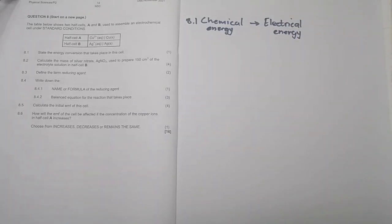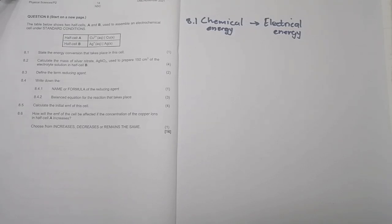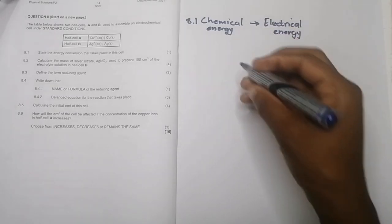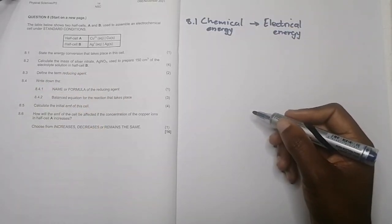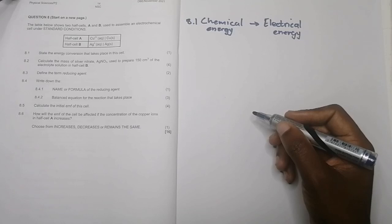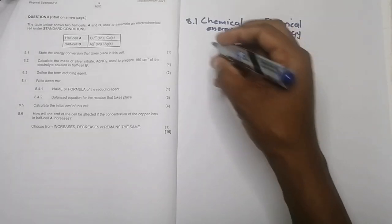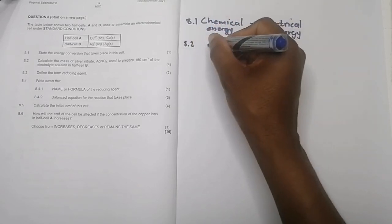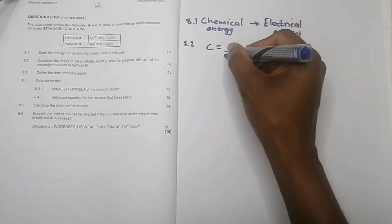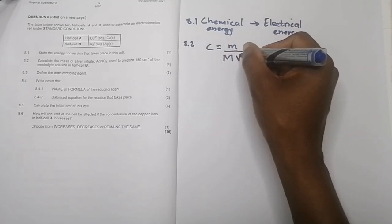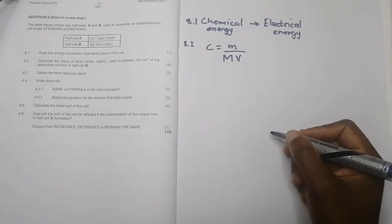The next question says: calculate the mass of silver nitrate used to prepare 150 cubic centimeters of the electrolyte solution in half cell B. Keep in mind the concentration of the electrolyte should be one mole per cubic decimetre. Since we're looking for mass and we have concentration, we'll use the formula: concentration = (mass / molar mass) × volume.